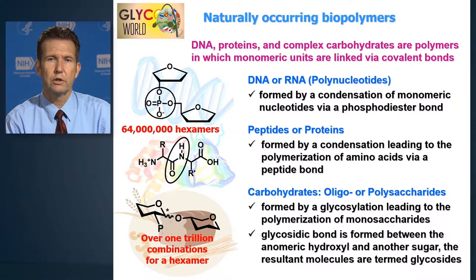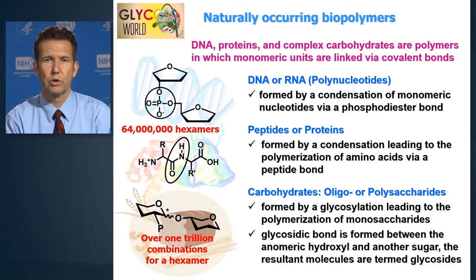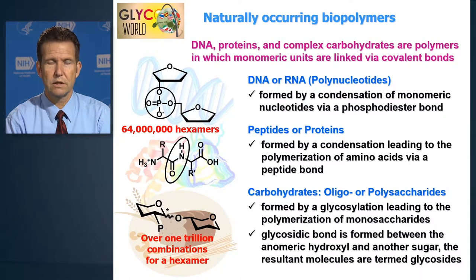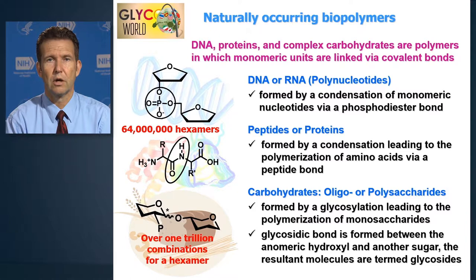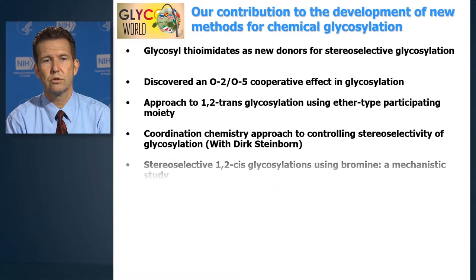Glycosidic linkage is one of the reasons the carbohydrate family is so diverse. It's also one of the reasons that chemists dealing with carbohydrate synthesis are still employed, because this represents a new chirality center shown with the star. And making this glycosidic linkage is a challenge.